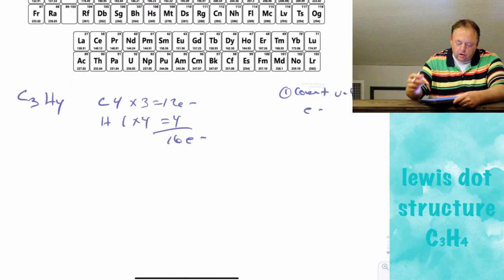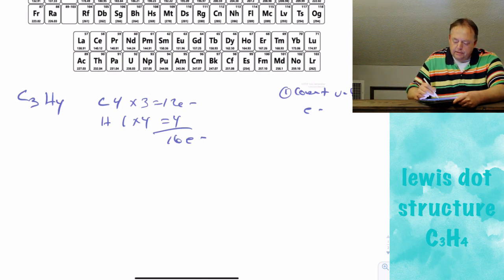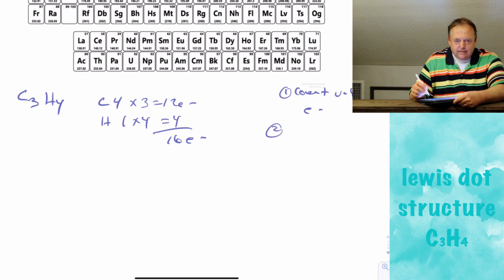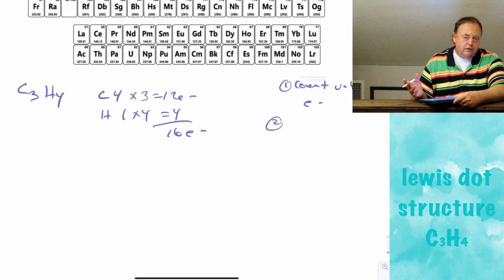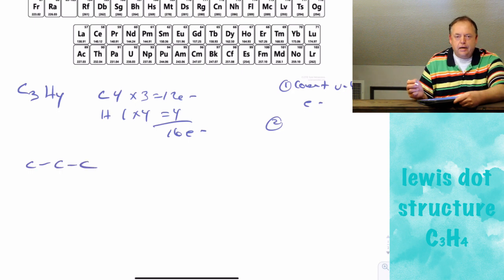This problem is a little harder than previous ones. The second rule was to put the atom that there's only one of in the middle and attach everything else to it — but here there's no atom that appears only once, so that rule doesn't apply. What we do now is trial and error. Let's put the 3 carbons in a chain.